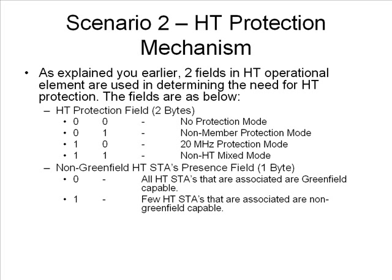As explained in the previous slide, the two fields used for the HT protection mechanism are the operating mode and the non-green field HT stations present field. Let me explain the details of these two parameters. The operating mode parameter has four types, also called mode 0 to mode 3.